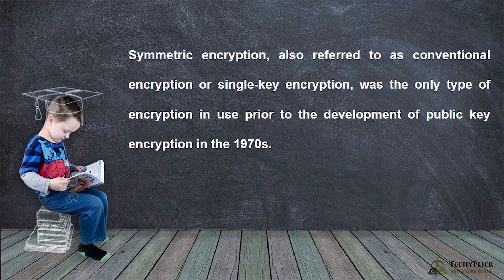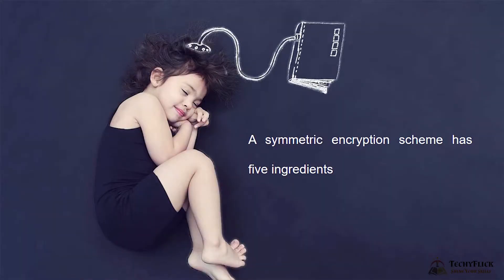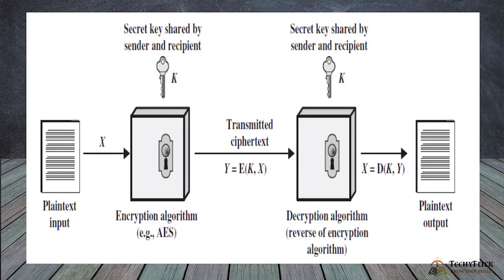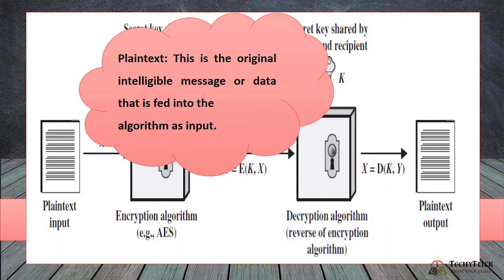Symmetric Encryption — also called Conventional Encryption or Single Key Encryption — has 5 ingredients. As explained in the diagram, those 5 ingredients are: Plain Text, Encryption, Decryption, Cipher Text, and Key.